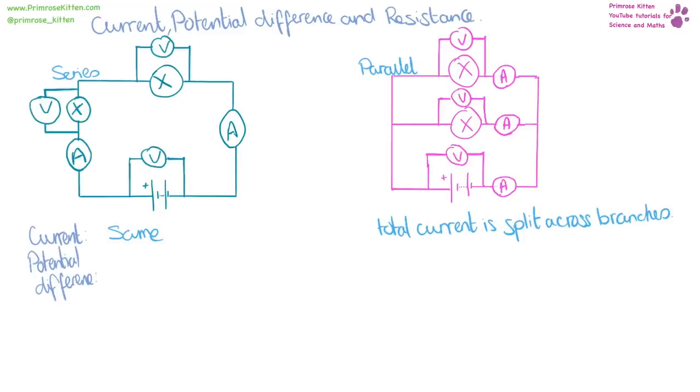The potential difference measured by a voltmeter. I'm going to measure the voltmeter around the battery, then a voltmeter around each of the bulbs. And you'll notice that the potential difference, the voltage at the battery, is split across the components. Whereas in a parallel circuit, the potential difference that we have here across the battery is the same as we have across each of the branches.